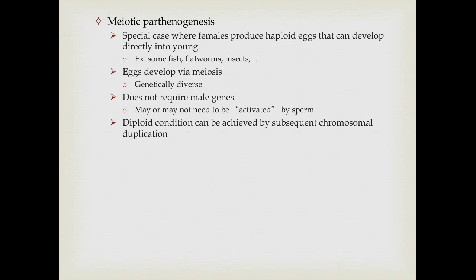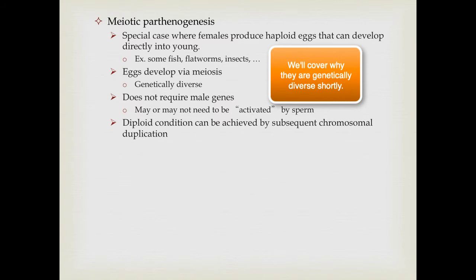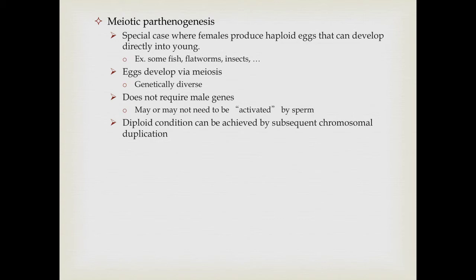Lastly, sexual reproduction can occur through meiotic parthenogenesis. In amyotic parthenogenesis we were making clones from diploid eggs, but in meiotic parthenogenesis, females produce haploid eggs like typical sexual individuals, and these eggs develop directly into young. This is seen in some fish, flatworms, and insects. Because the eggs are haploid and developed via meiosis, they are genetically diverse — all offspring produced are different from each other. That's how meiotic and amyotic parthenogenesis differ: amyotic produces diploid clones, while meiotic produces genetically diverse, non-clonal individuals.